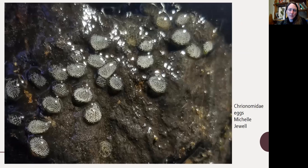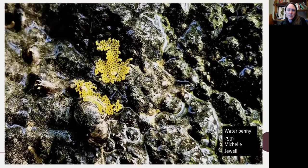Here are some examples of eggs. These are chironomid eggs stuck to a rock in a kind of jelly mass — each one is a separate oviposition event. And these are water penny eggs, often laid in clumps, presumably for protection.